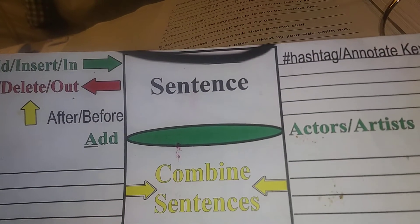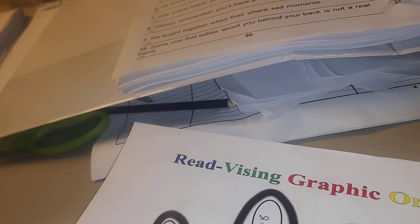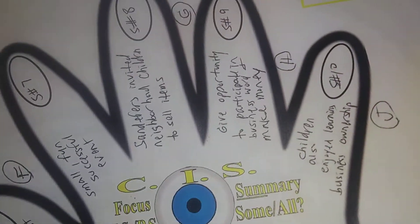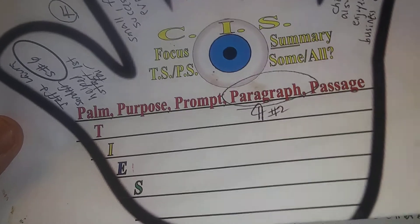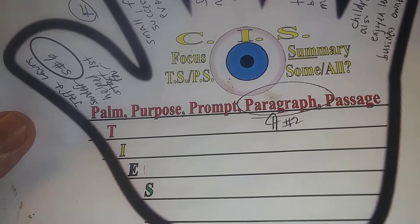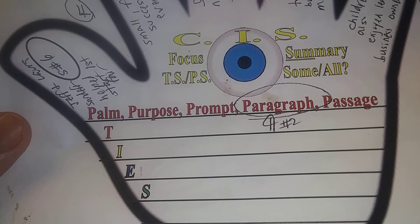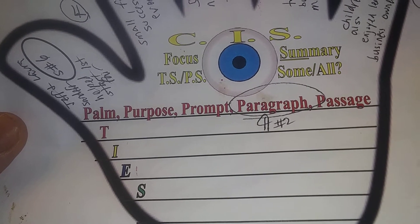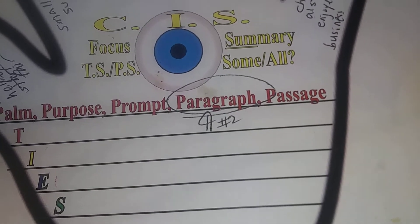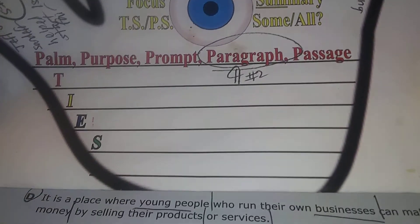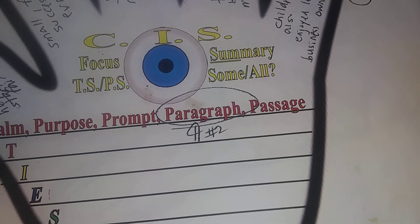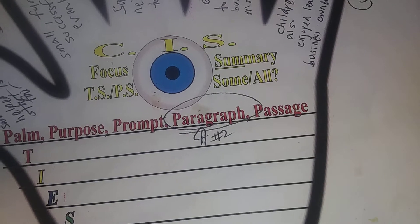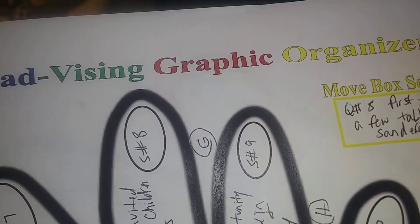In this case we're going to be adding a sentence. If you look at my READ revising graphic organizer, we see that it says P-A-L-M: Purpose, Prompt, Paragraph or Passage. In this question they're asking about the best place to insert a sentence in paragraph two.